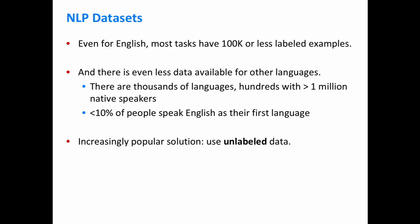That's of course only for English. There are thousands of other languages, and this is a problem with NLP data as it exists today — the vast majority of data is in English, when in reality fewer than 10% of the world's population speaks English as their first language. These problems with small datasets are only compounded across the full spectrum of languages. The popular solution that's had recent success is using unlabeled data, because unlike labeled data, unlabeled data is very easy to acquire for language — you can just go to the internet, go to books. Labeled data usually requires at least crowdsourcing, and sometimes expert linguists to annotate.